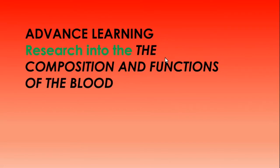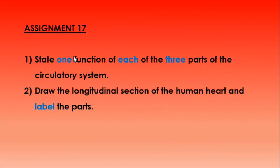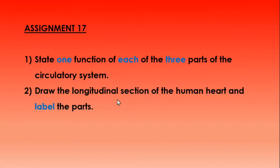For your research, look into the composition and function of the blood — all the things found in blood and their functions — which will be the focus of our next lesson. Your assignments are: one, state one function of each of the three parts of the circulatory system; and two, draw the longitudinal section of the human heart and label the path. Drawing the human heart is important in B.E.C. practical exams.